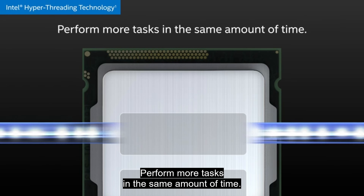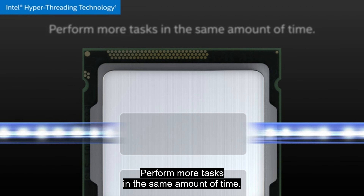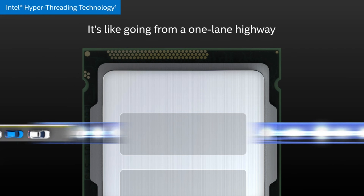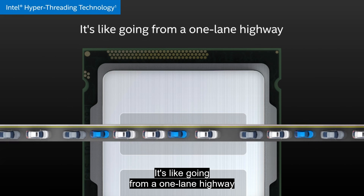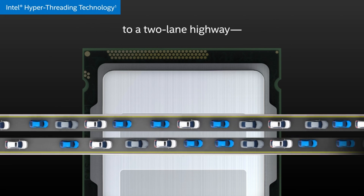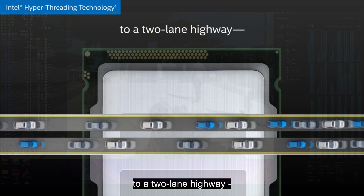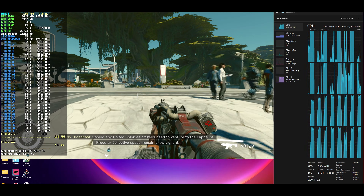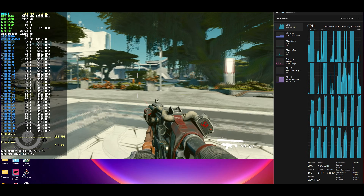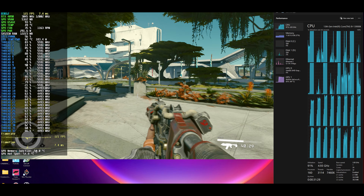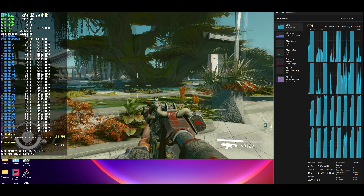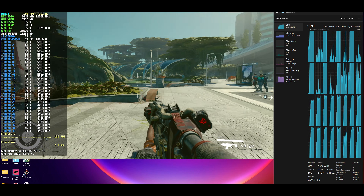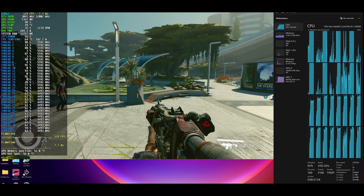I benchmarked 40 games so you don't have to, in order to find out if Intel's hyper-threading technology is useful for these modern higher core count CPUs which are utilizing little E-cores. Have you ever wondered how much of a difference having all these threads at your disposal can make to your gaming experience? Well, that's what we're here to find out. Let's get into it.